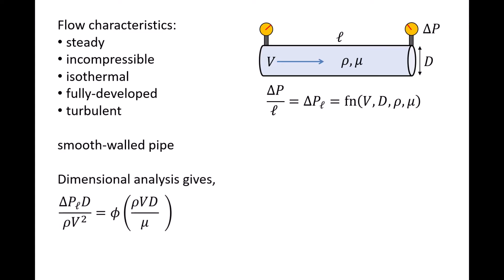Applying dimensional analysis, we found that we could study this system using two dimensionless groups of variables called pi groups. The pi group delta P L D over rho V squared is some unknown function phi of the Reynolds number, rho V D over mu. So how can we find the function phi?